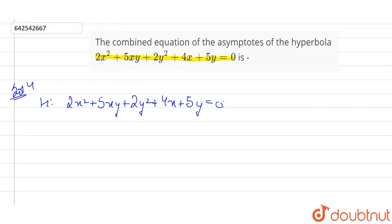Now, the combined equation of asymptotes is what? The equation of hyperbola plus some constant value. This is what the combined equation of asymptotes will come out at.